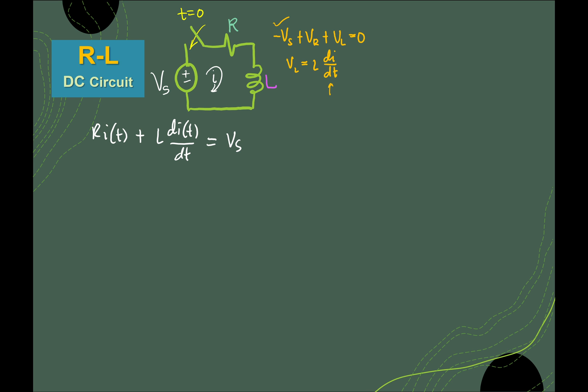We have Vs on the right-hand side — put the source on the other side; you can transpose negative Vs to the right-hand side. Then you have Vr, which is resistance times current, plus L di/dt. That is the voltage induced due to the changing current.